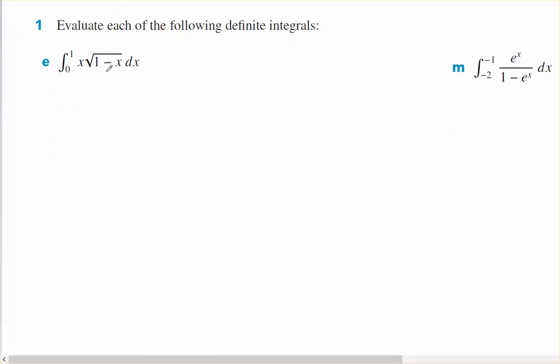Inside a square root, I have 1 minus x, so x to the power of 1. And outside I've got an x also. So I'm going to use a linear substitution. I'm going to make the bit underneath the square root equal to u. So u equals 1 minus x.